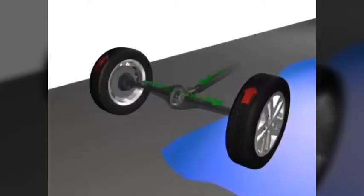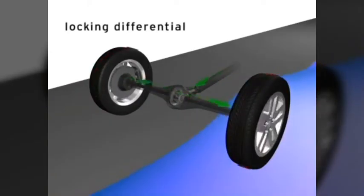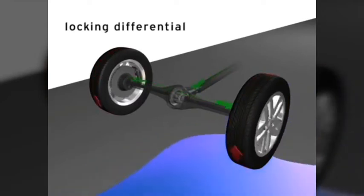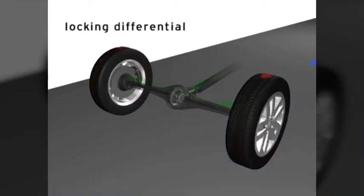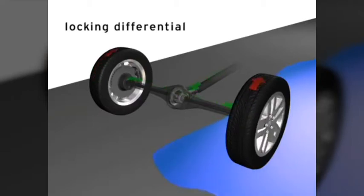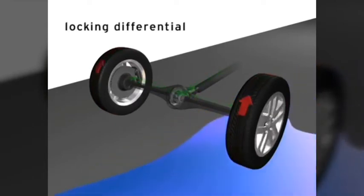The next type of differential is known as a locking differential. Locking differentials have mechanisms that can literally lock the two rear axles together when needed. With a locking differential, both axles receive equal power so that the wheel with the most traction will always have power.